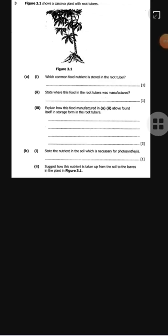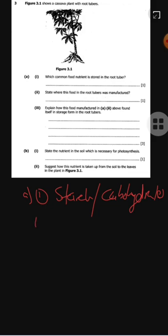Figure 3.1 shows a cassava plant with root tubers. Which common food nutrient is stored in the root tubers? The common food nutrient is starch or carbohydrates. They are stored in root tubers. State where this food in the root tuber was manufactured. It was manufactured in the leaves or in the leaf.